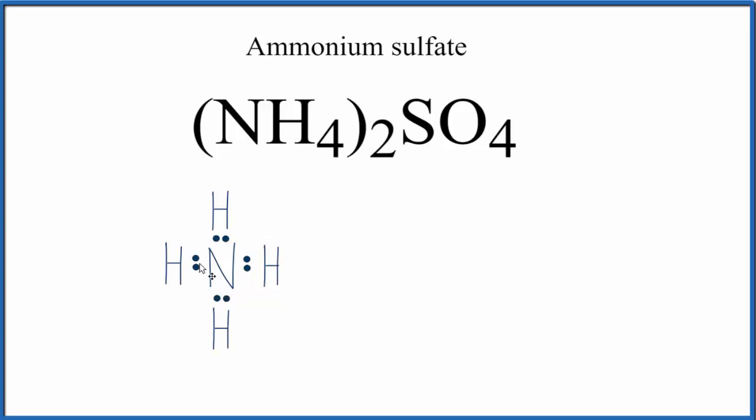Now, we should put brackets around this because it is an ion. Let's put brackets around the ammonium ion. And we said that it's a positive charge. If you look ammonium ion up on a list of common ions, common polyatomic ions, you'll see it has a plus 1 charge.